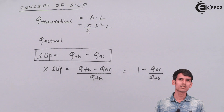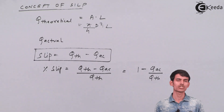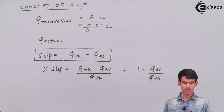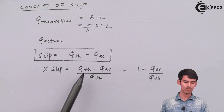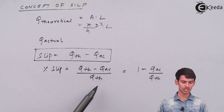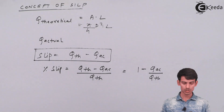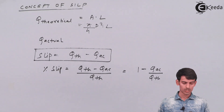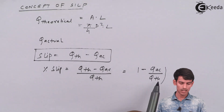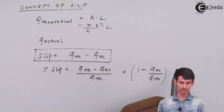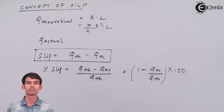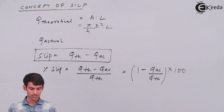There is one more term: percentage slip. Percentage slip = (Q_theoretical − Q_actual) / Q_theoretical, which can be rewritten as 1 − (Q_actual / Q_theoretical). This value comes as a fraction, and multiplying by 100 gives the percentage slip.